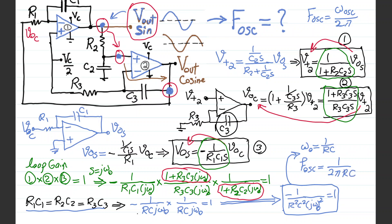That is the final result. With the simplifications and assumptions made for this ideal circuit, the frequency of oscillation is f = 1/(2πRC). I hope this example is helpful.